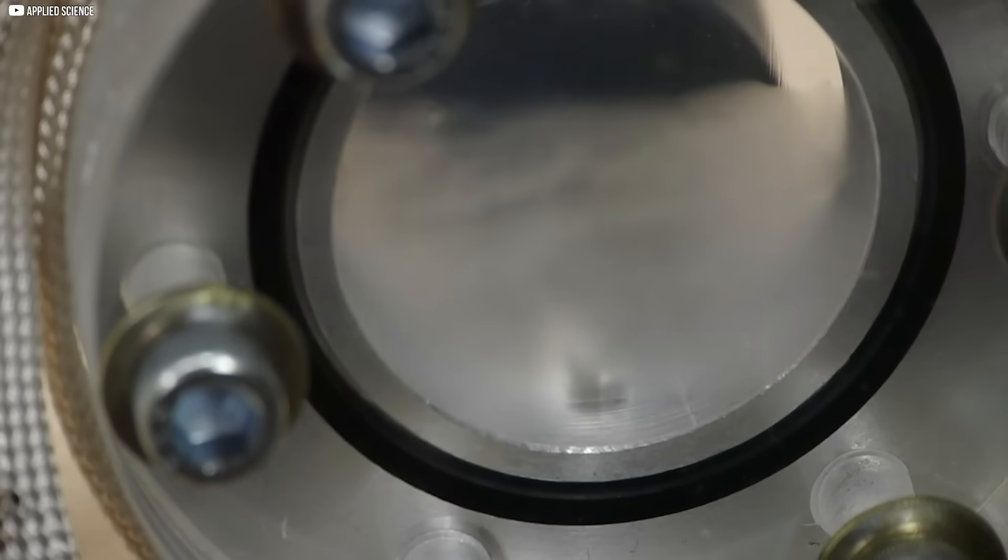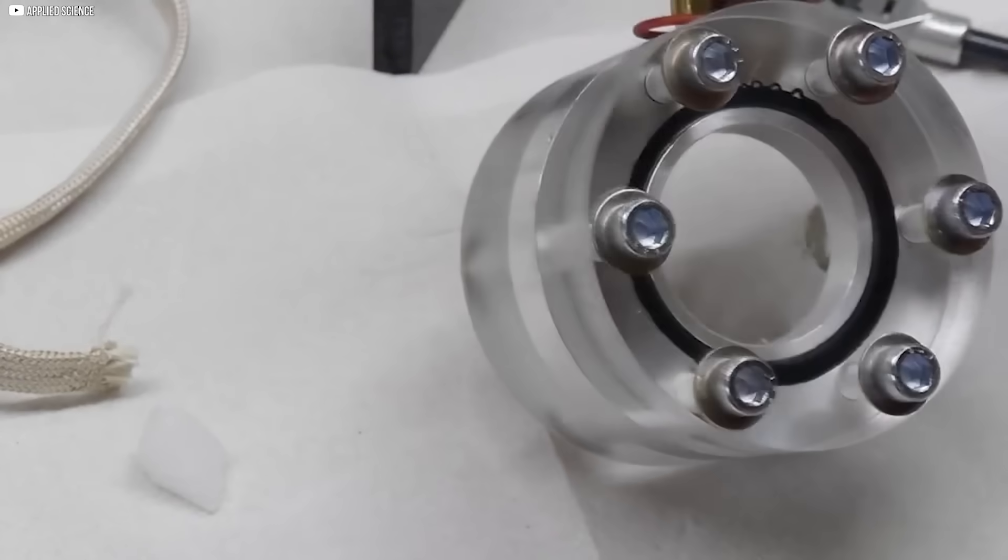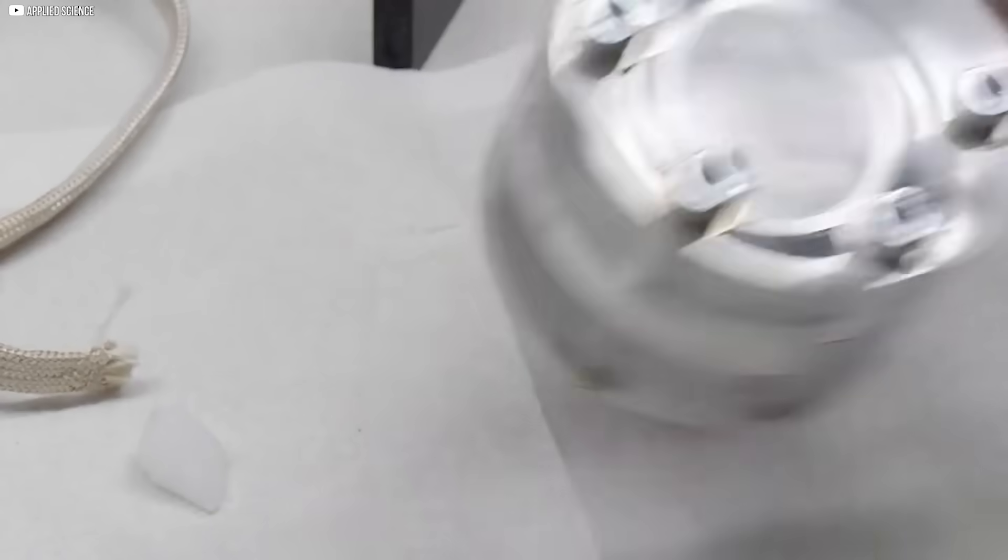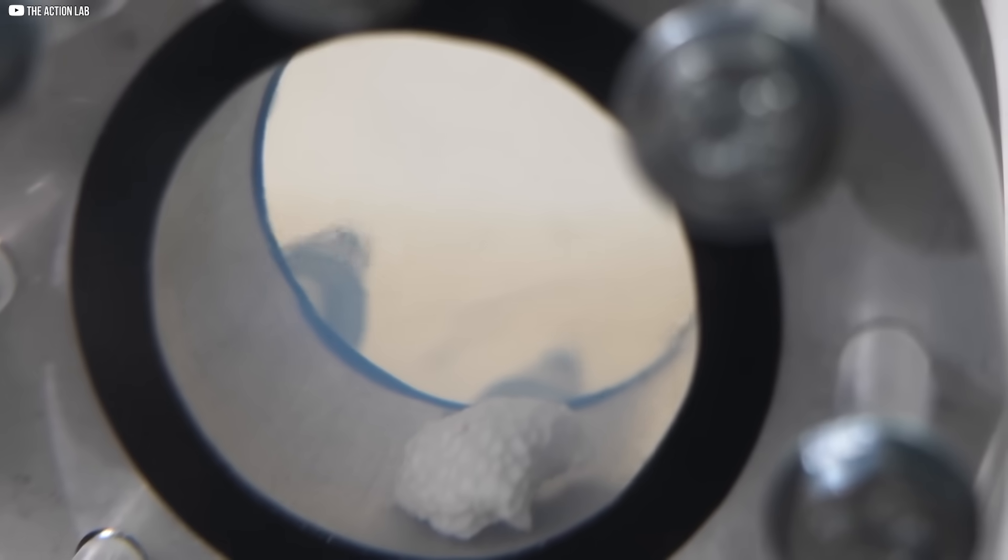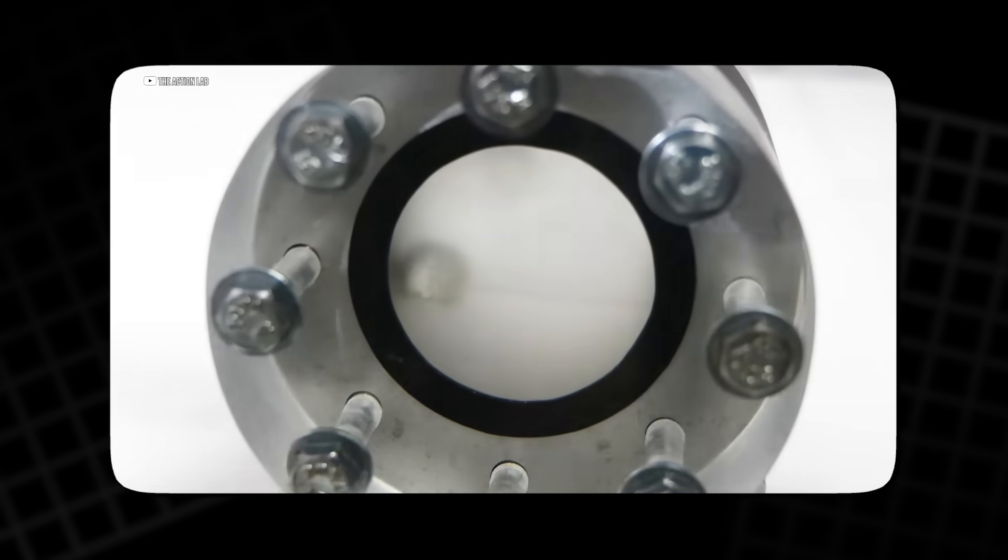As the conditions change, the CO2 first becomes a liquid and, with more heat, crosses the threshold to become supercritical. At this point, CO2 behaves like both a gas and a liquid, dense enough to store energy, yet able to flow freely through systems.